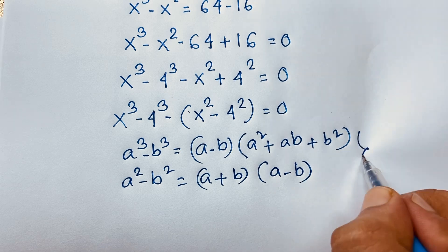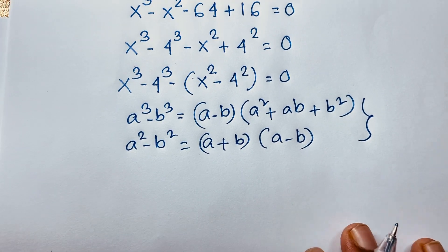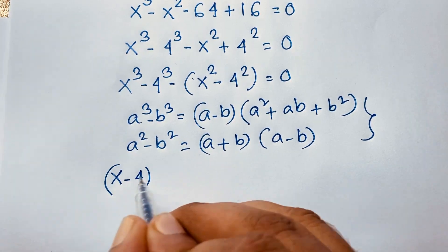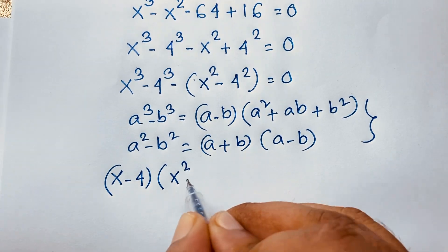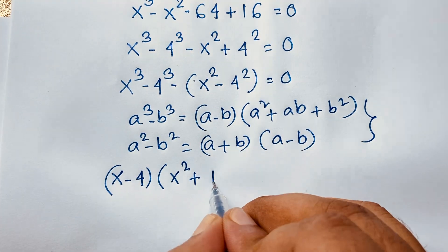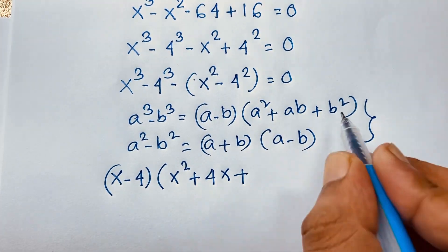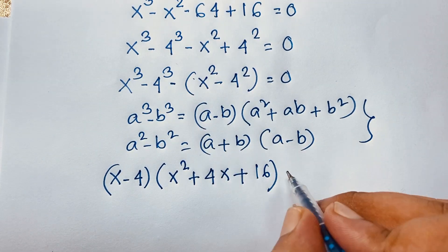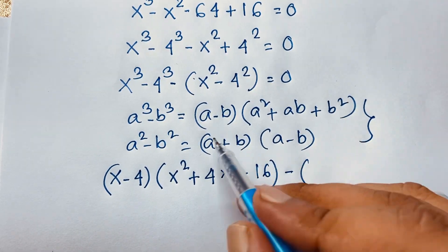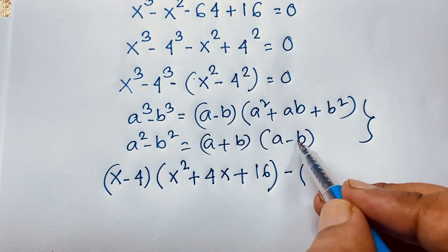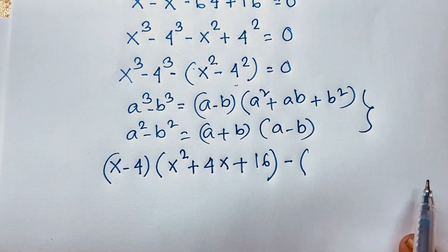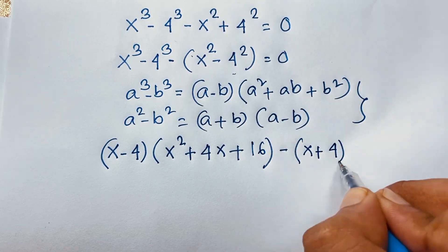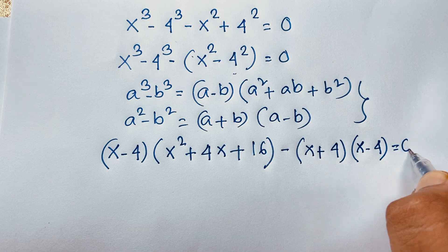So I apply this formula here. x cubed minus 4 cubed equals (x minus 4)(x squared plus 4x plus 16). Then here, with the negative sign, a squared minus b squared gives (a plus b)(a minus b), so it will be (x plus 4)(x minus 4). So here, (x plus 4)(x minus 4) is equal to 0.